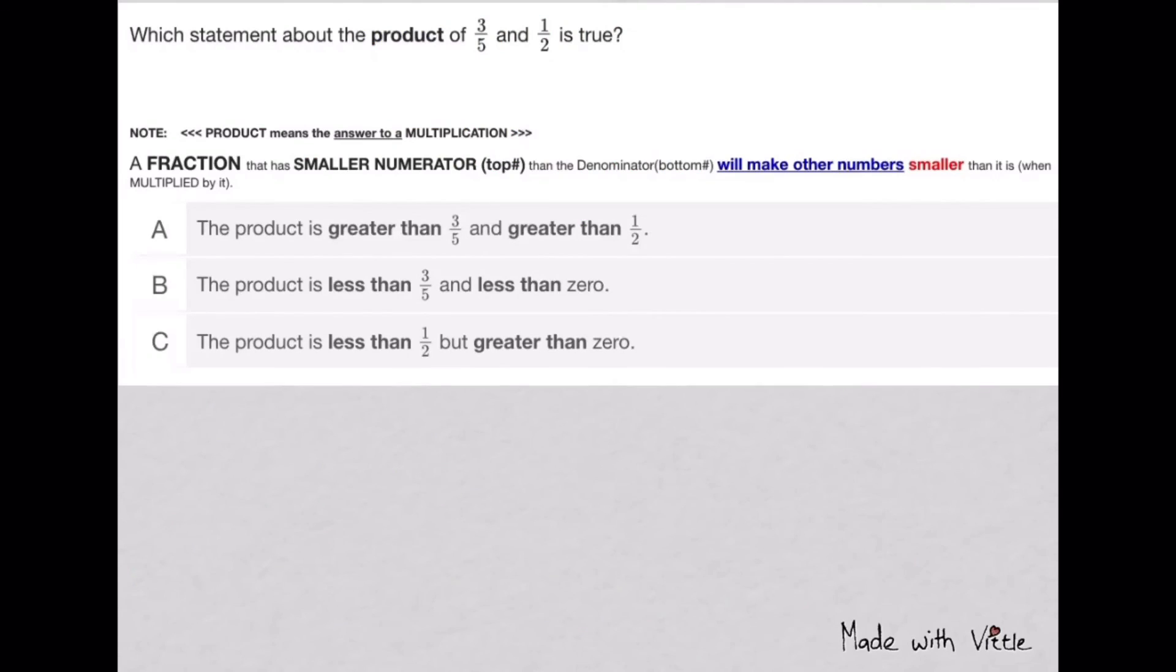Which statement about the product of 3/5 and 1/2 is true? Remember that a fraction that has a smaller numerator, top number, than the bottom number, will always make the other number smaller than it is when they are multiplied by this fraction whose top number is smaller than the bottom. It's like taking just a part of the other one and making it smaller.